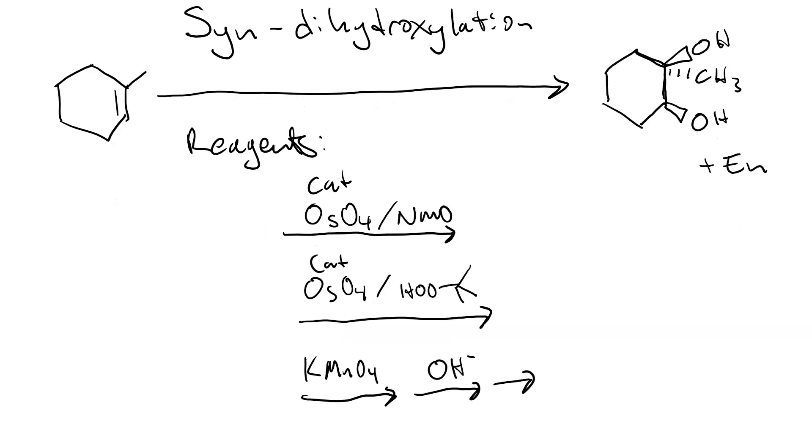There's also a third pathway that involves using potassium permanganate, KMnO4, followed by hydroxide with a workup at cold temperatures. But, this is a very strong oxidizing agent, and it's hard to control the products you get.